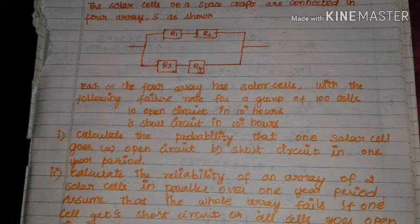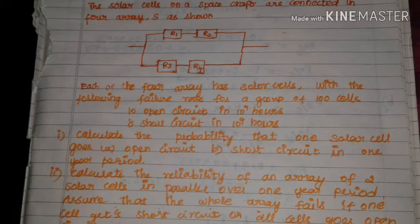First question: the solar cells on a spacecraft are connected in 4 arrays. The connections R1, R2, R3, R4 — R1 and R2 are series connected, R3 and R4 are series connected, with the other end in parallel. Each of the 4 arrays has solar cells with the following failure rate for a group of 100 cells: 10 open circuit failures in 10 to the power 9 hours, and 8 short circuit failures in 10 to the power 9 hours.